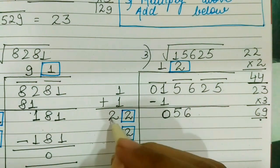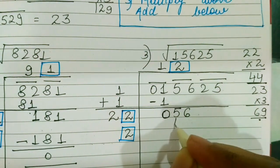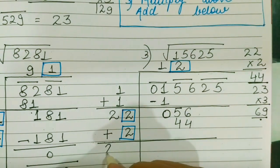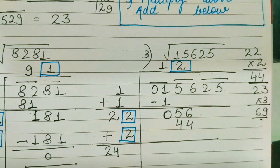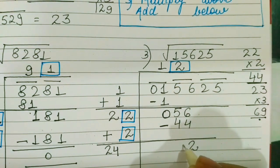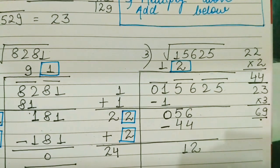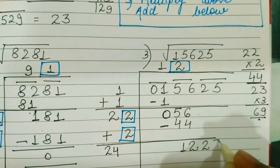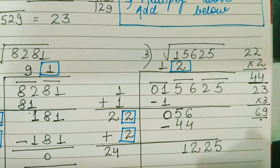Now 22 into 2 is going to give me 44. And 22 plus 2 is going to give me 24. 56 minus 44 will be 12. Copy the next possible pair.